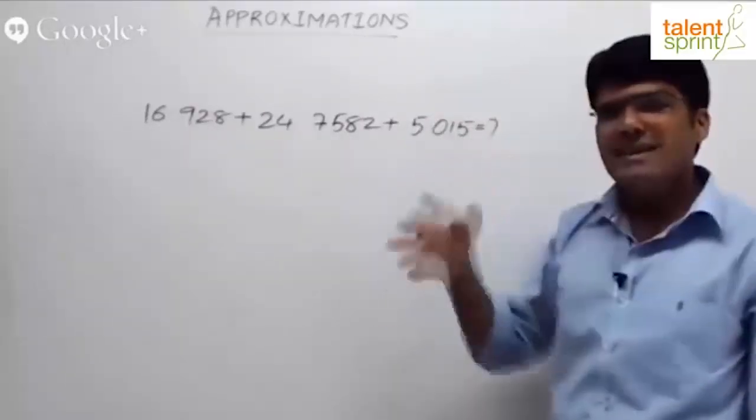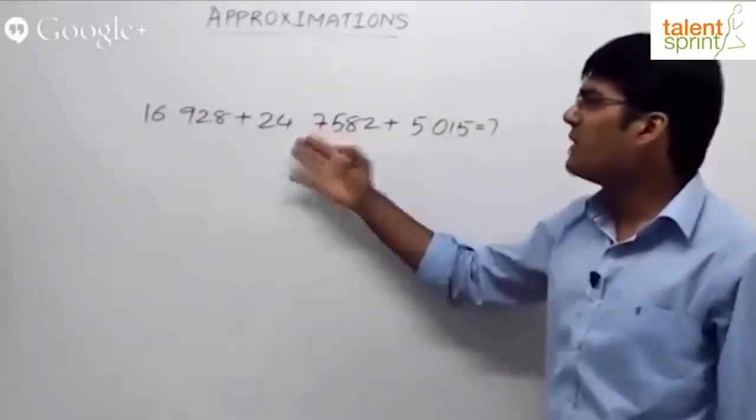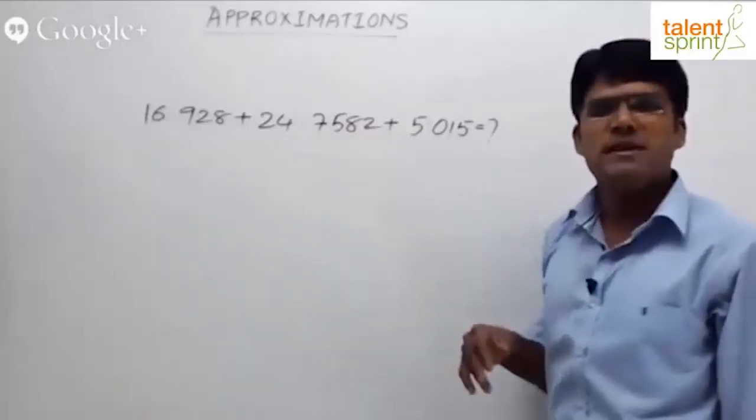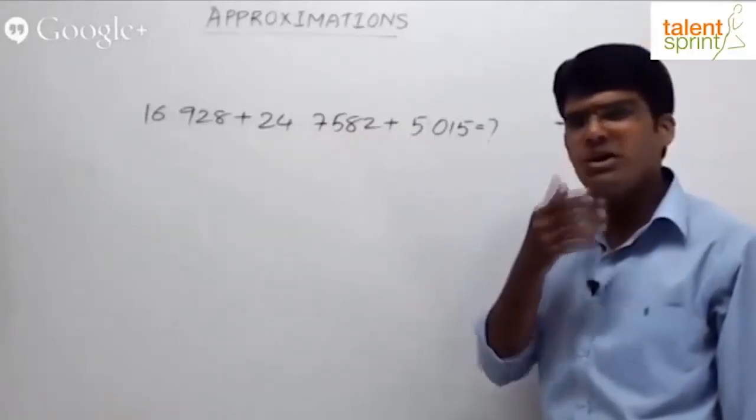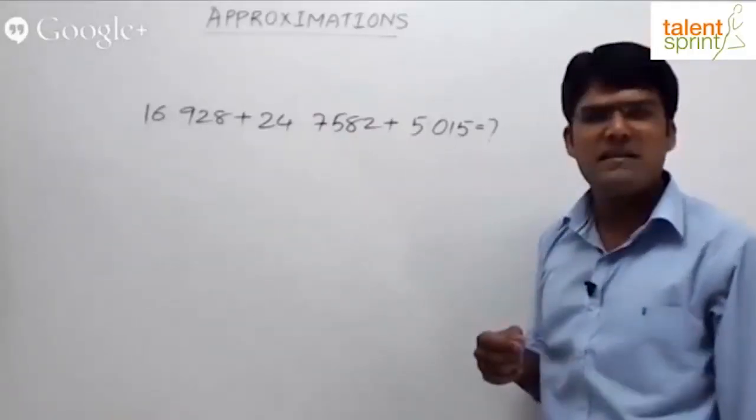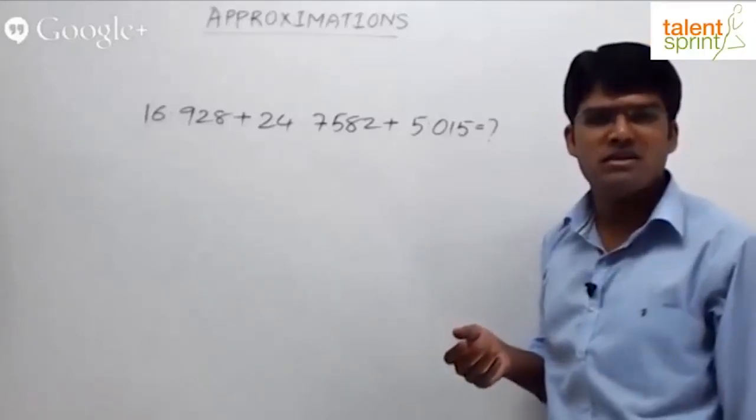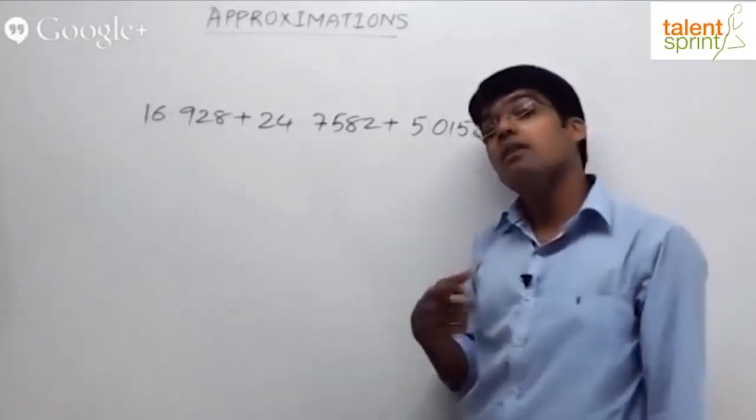16.928 is approximately 17, 24.75 is approximately 25. 17 and 25 is 42, 42 and 5 is 47. The answer should be close to 47. Look at the options - in fact, you're required to look at the options before.